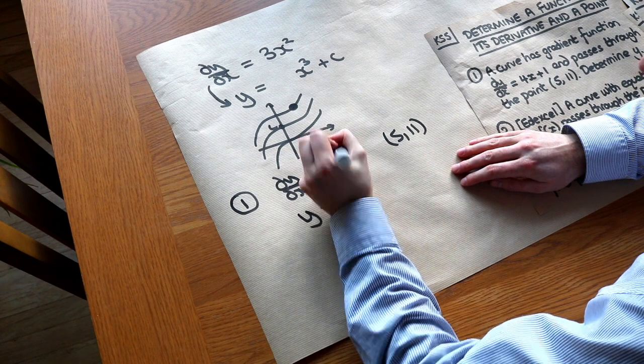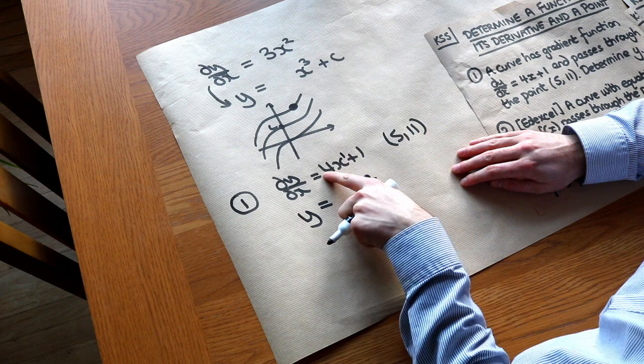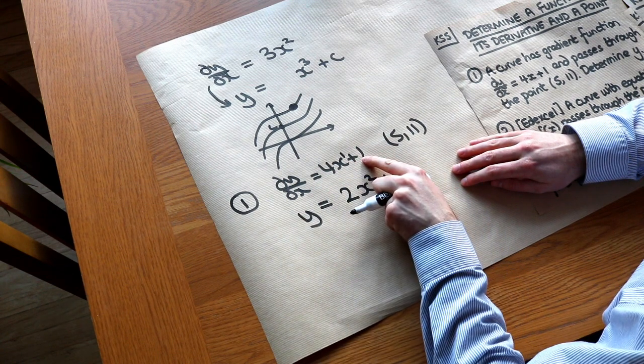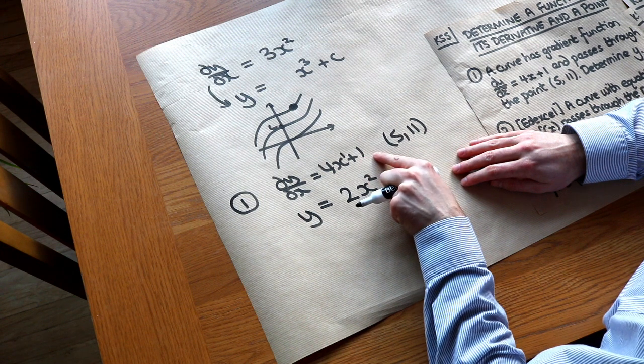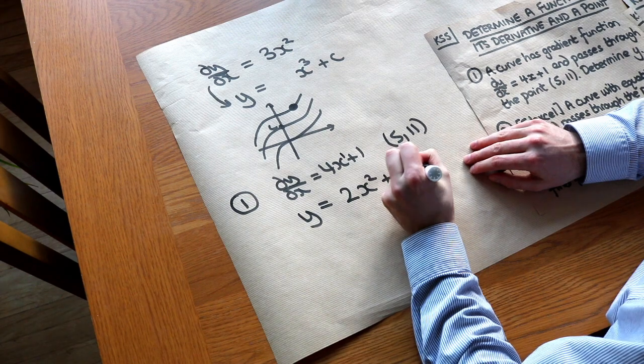So remember, we add 1 to the power, so that becomes x², and we divide by that new power, so 4 gets divided by 2 to get 2. Any constant will become that constant times x, so that becomes 1x, or just x. And then we've also got this plus c.